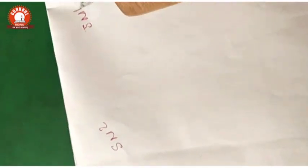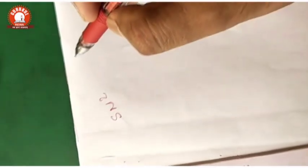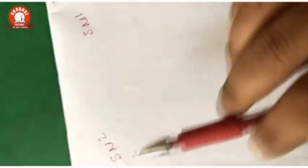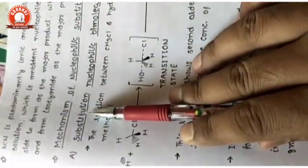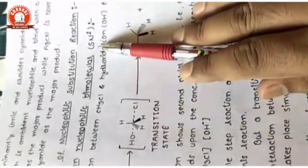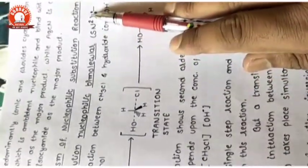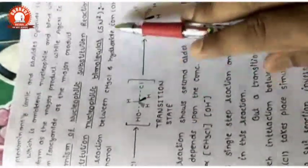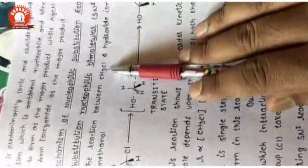We will see the mechanism of nucleophilic substitution — that is SN1 or SN2, two types. The first is substitution nucleophilic bimolecular, which is called SN2. The number two is present in SN2.